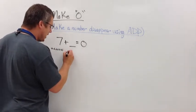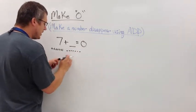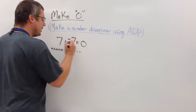Hopefully you're thinking the same as I am. One, two, three, four, five, six, seven. Seven of its opposites so that they would cancel out. Or negative seven.